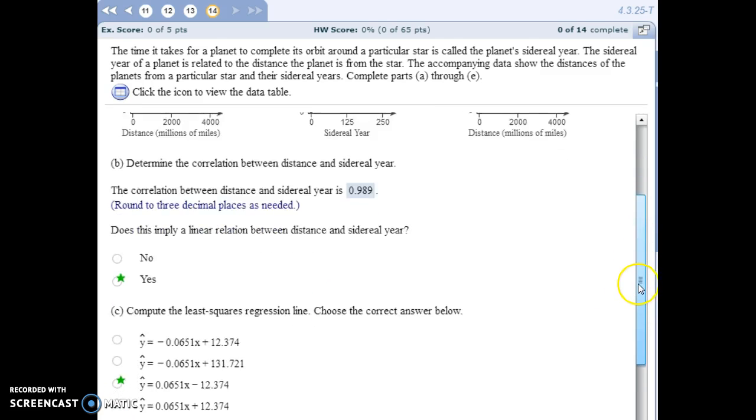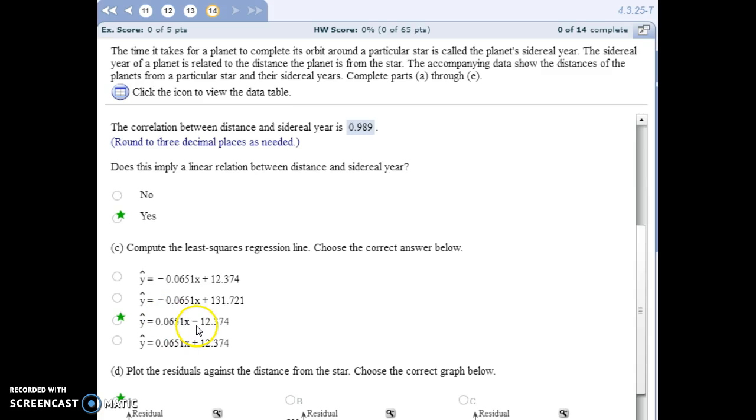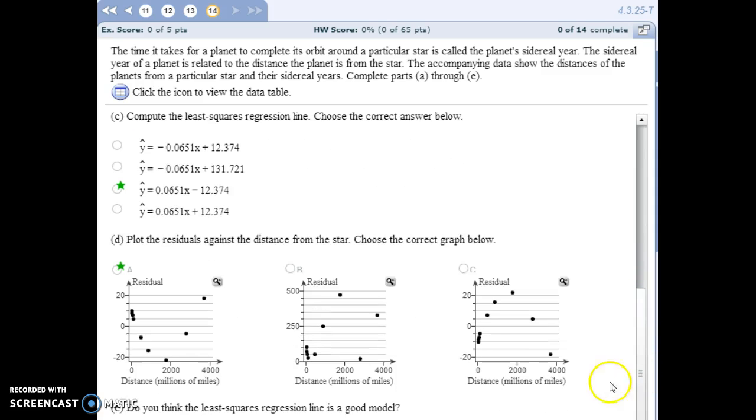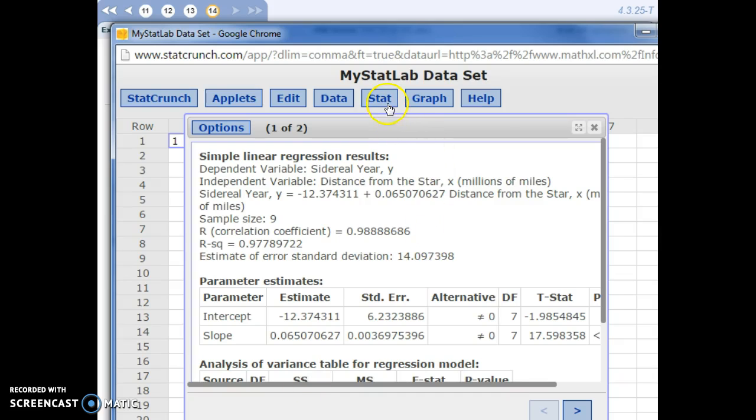For part C, it wants us to list the least squared regression line, which we already computed in StatCrunch. Now, we want to test whether a linear relationship really does exist. We're going to do that by plotting the residuals. So, if we jump back into StatCrunch, it can do that for us as well.